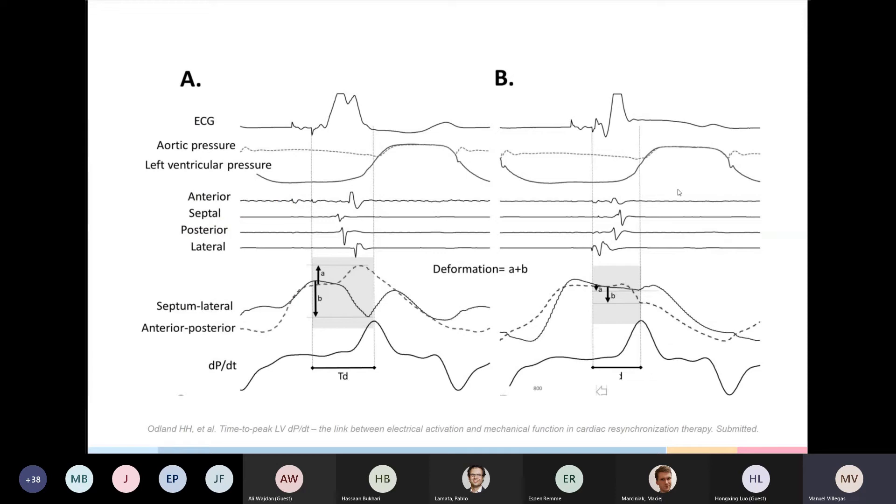Going back to TD, this graph shows an example of how this index is measured. The dash lines here mark the onset of the electrical activation, while this one measures the dP/dt max down here. So basically, this time interval between two dash lines is the measurement that we're doing. This is TD. In the left side here, we have a case with right ventricular free wall pacing that creates big dyssynchrony, as you can see from the activation sequence of the electrograms, with an early septum activation and a late lateral activation.